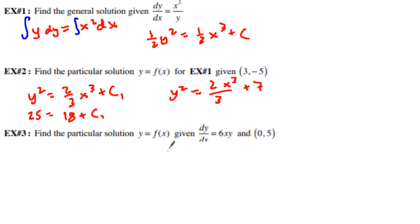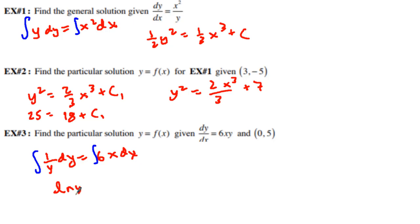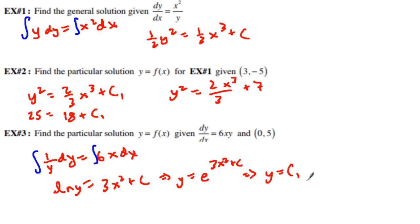For the next particular solution, we again use separation of variables: (1/y) dy = 6x dx, primed and ready to integrate. We get ln|y| = 3x² + C. Raising e to both sides gives y = e^(3x² + C), which becomes y = C₁e^(3x²). Plugging in x = 0 gives 1, and y = 5, so C₁ = 5. The particular solution is y = 5e^(3x²).